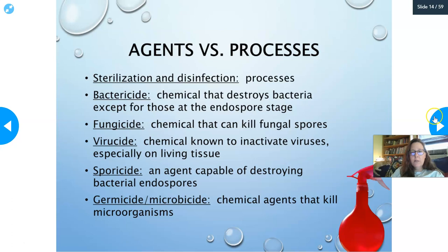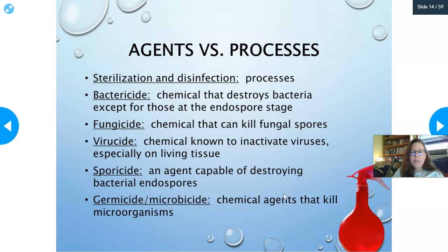Sterilization and disinfection are processes — things you do. Agents are chemicals or physical agents like heat. Bactericidal chemicals destroy bacteria except endospores; sporicidal agents kill endospores. A fungicide kills fungal spores; a viricide inactivates viruses. A germicide or microbicide is a general term for a chemical that kills microorganisms. If an agent is bactericidal, fungicidal, viricidal, and sporicidal, it is a germicidal or microbicidal chemical.